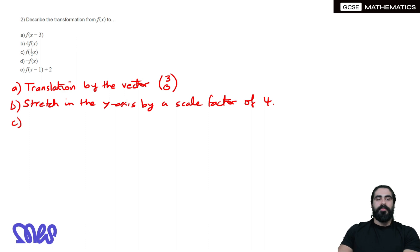f(half x)—that's within the bracket, affecting the inputs. Remember we do the opposite, so instead of halving the x-values, we're doubling them. It's a stretch in the x-axis by a scale factor of 2, so instead of halving, we're doubling.